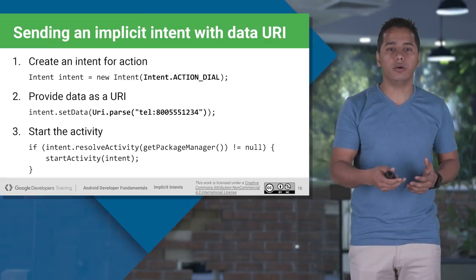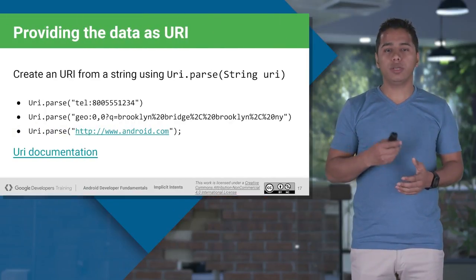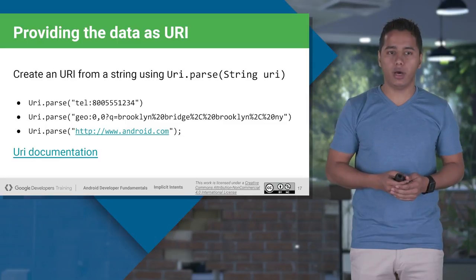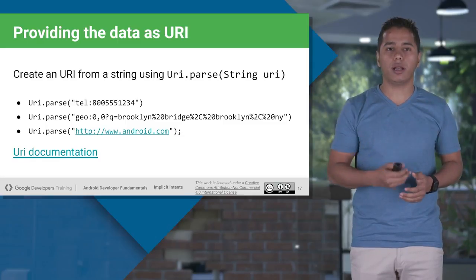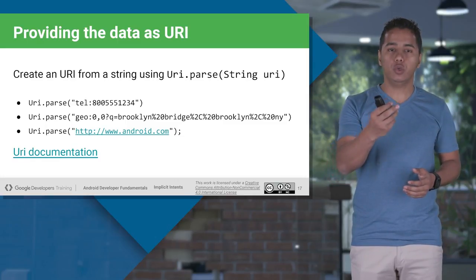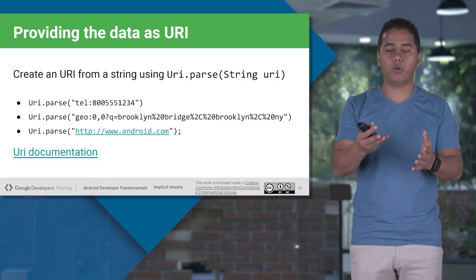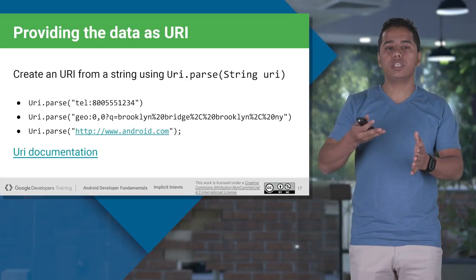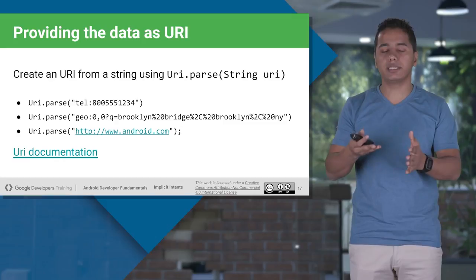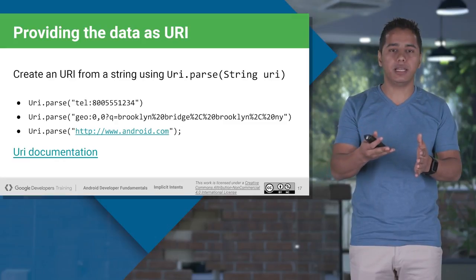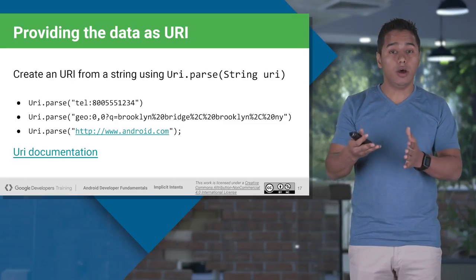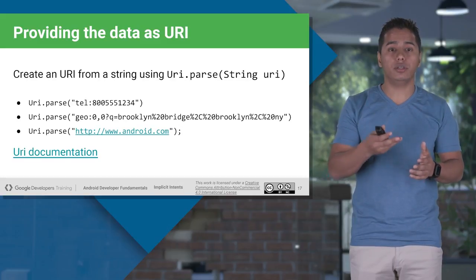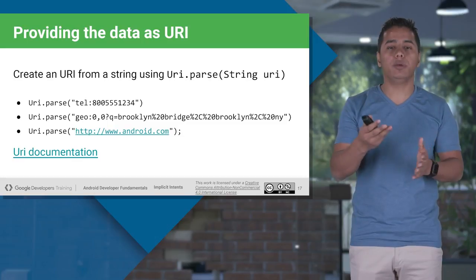To provide a data URI, use URI.parse and then provide the data scheme. The data scheme depends on the kind of data you are passing. If passing a telephone number, the scheme is 'tel'. If passing longitude and latitude for maps, the scheme is 'geo'. For a website URL, the scheme is 'http'.